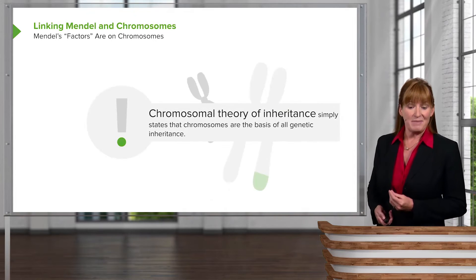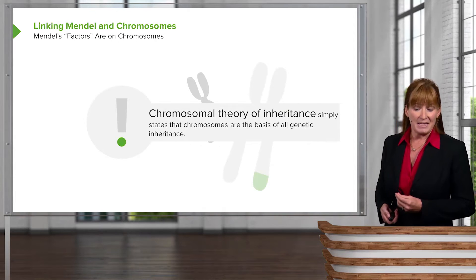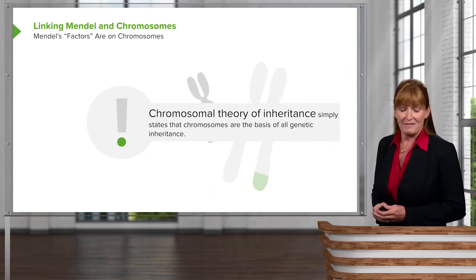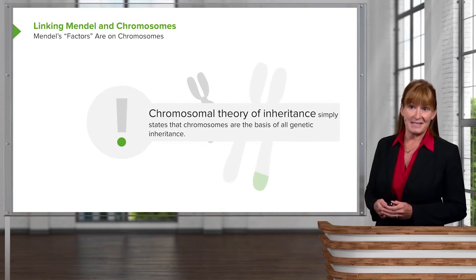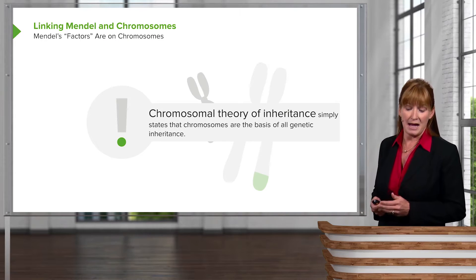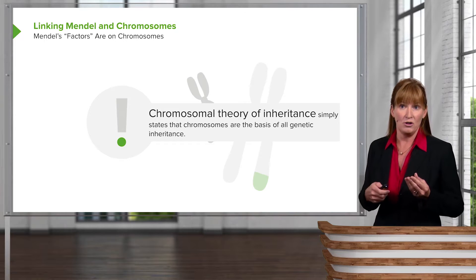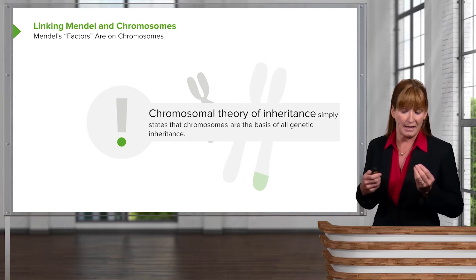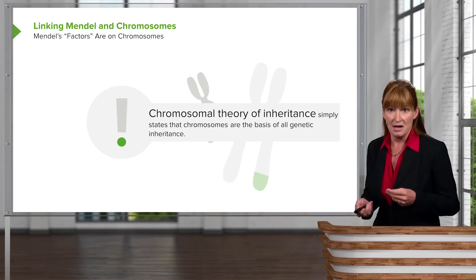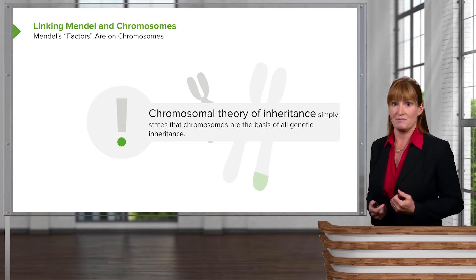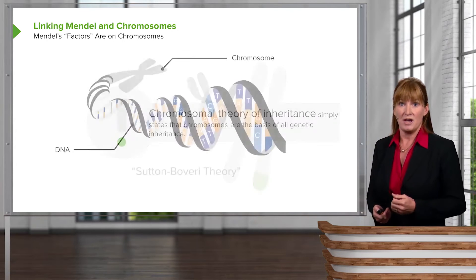So let's begin by taking a look at the chromosomal theory of inheritance. Basically, it says that chromosomes are the basis of all genetic inheritance. So in short, genes are located on chromosomes.